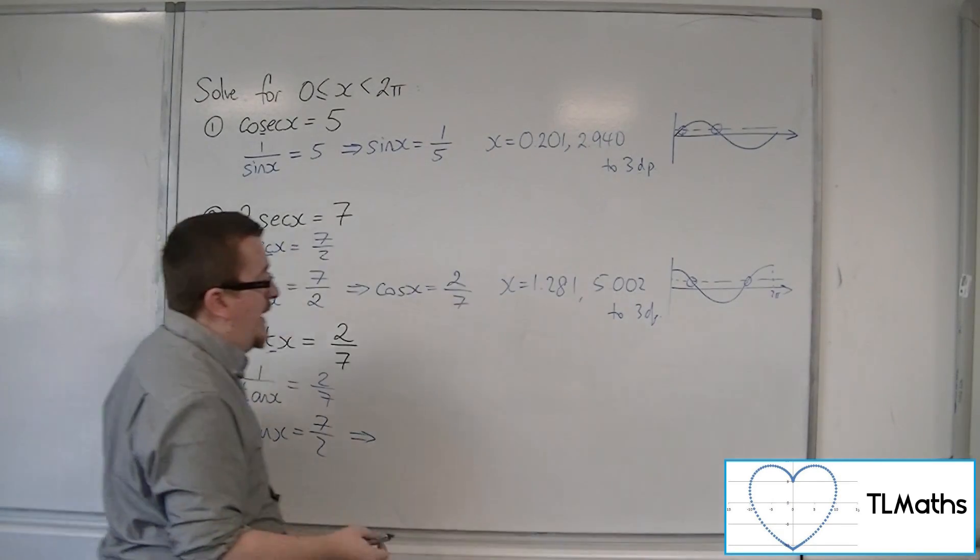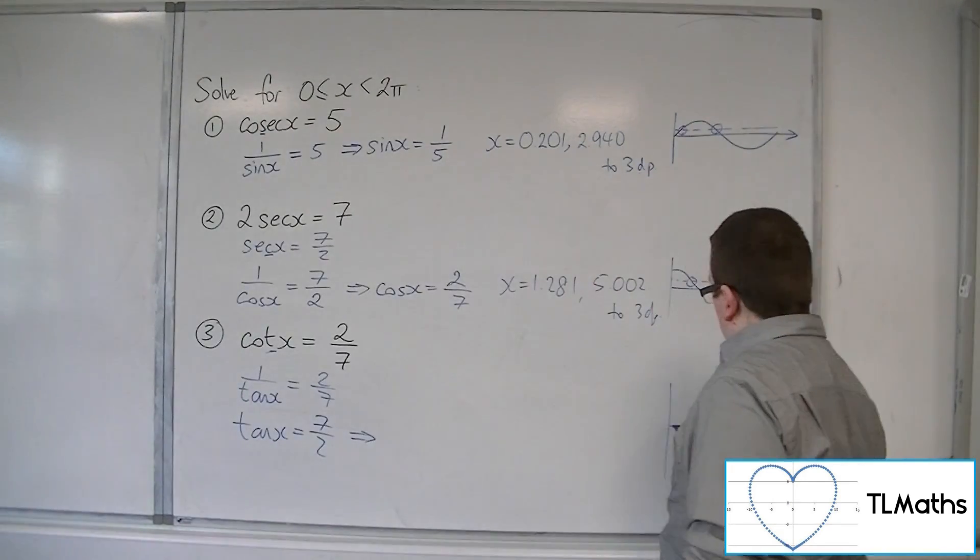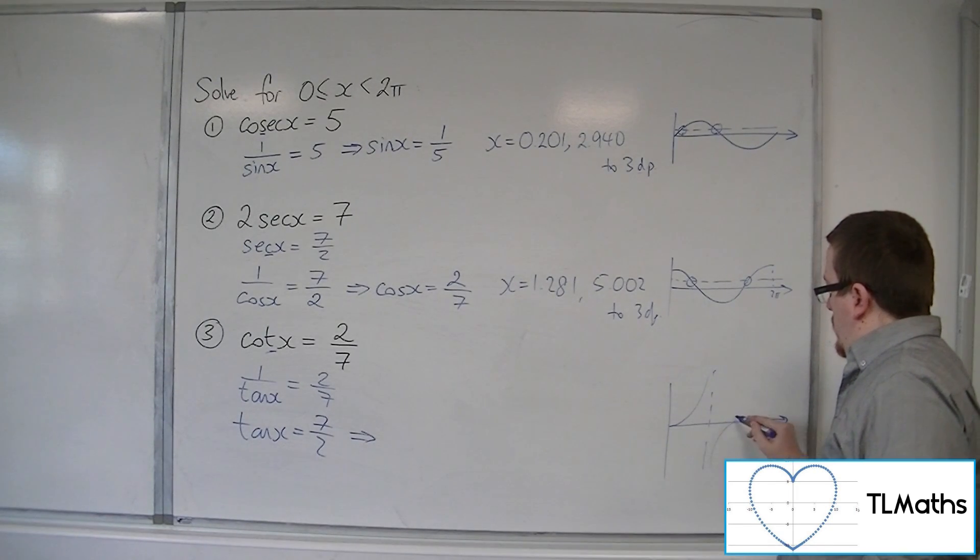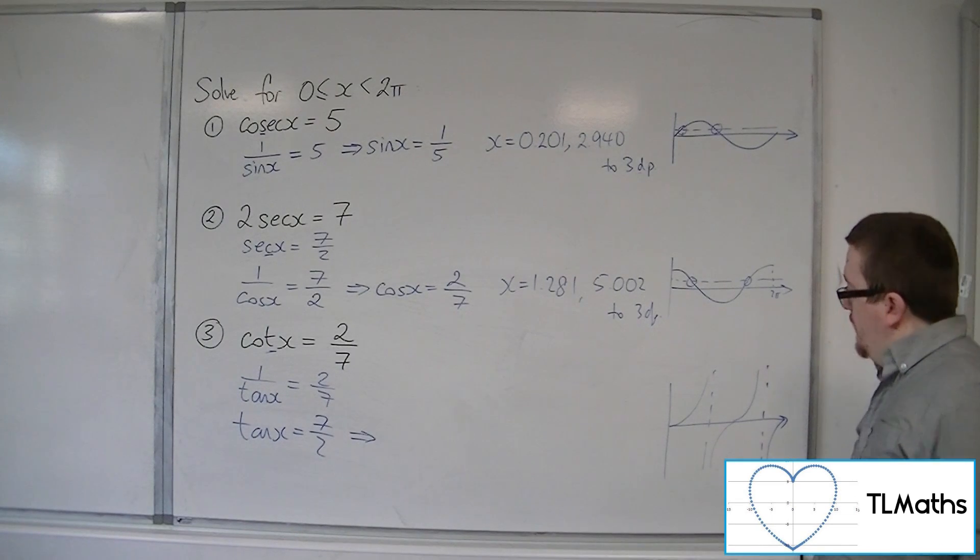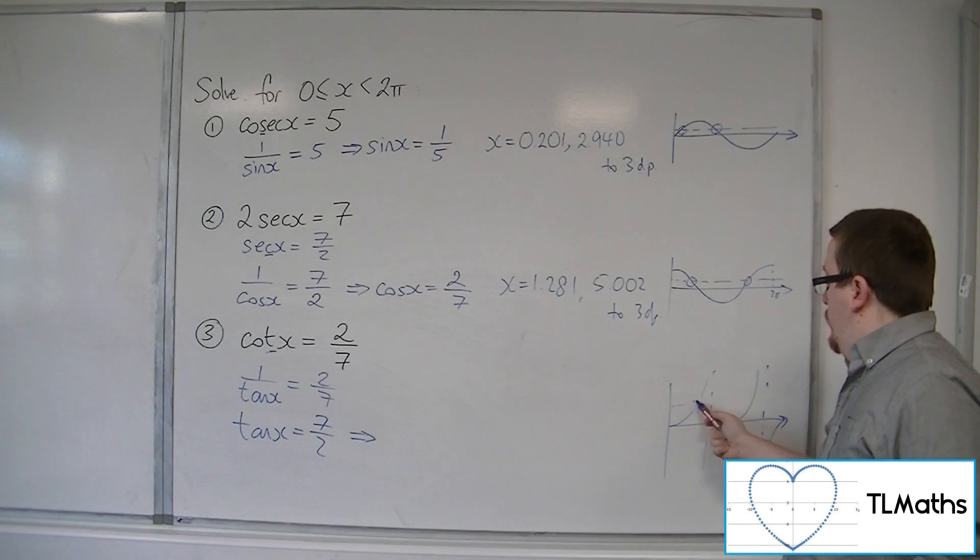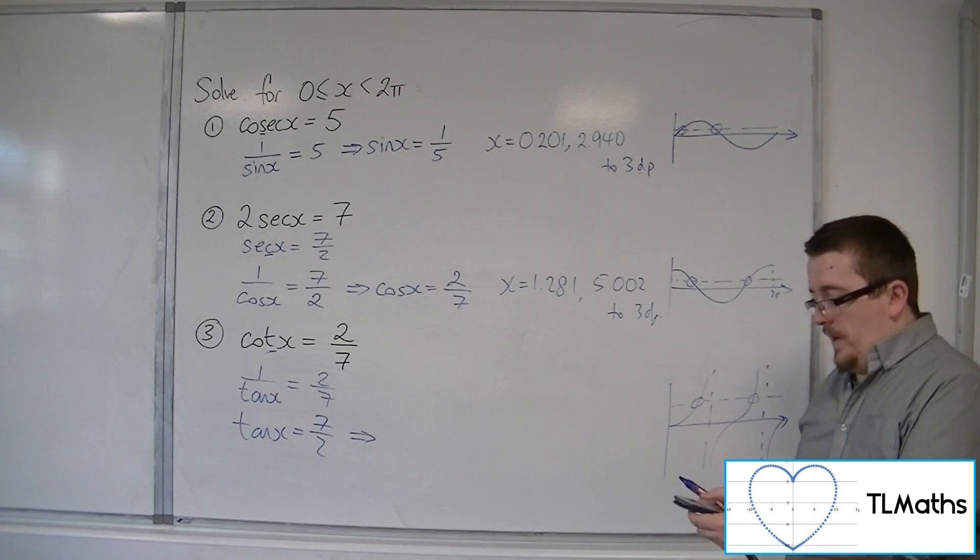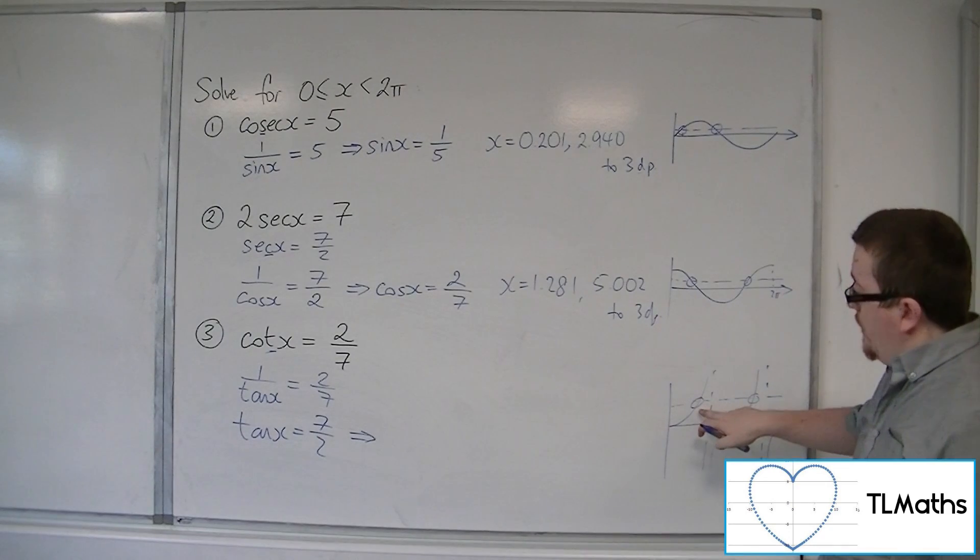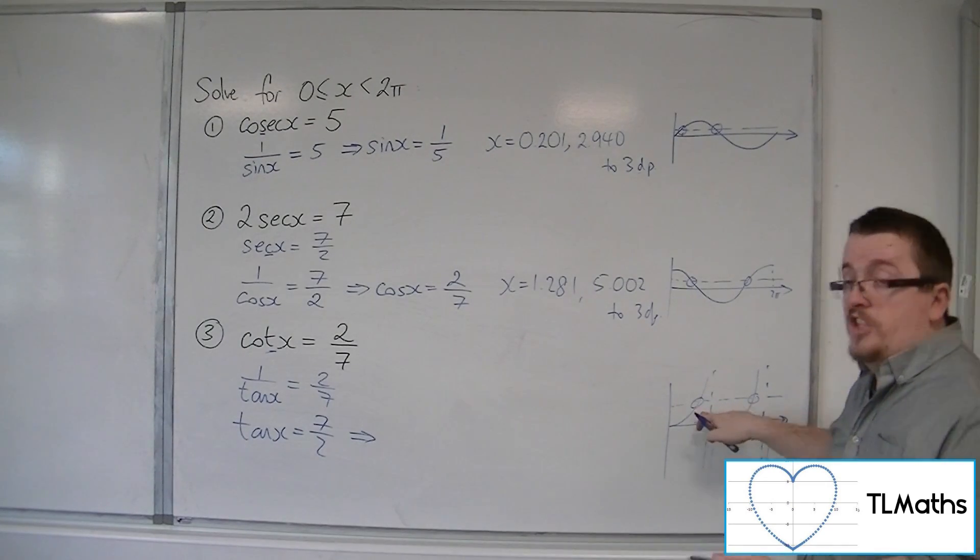So tan looks something like this. 7 over 2 will give us two solutions. So we can do inverse tan of 7 over 2 to get us the first solution here. So that's 1.292.